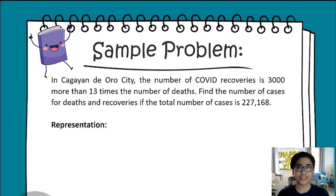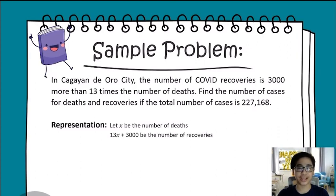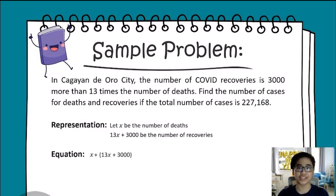To represent this, let x be the number of deaths and 13x + 3,000 be the number of recoveries. To form this into a linear equation, we have the sum of x and 13x + 3,000 equals 227,168.